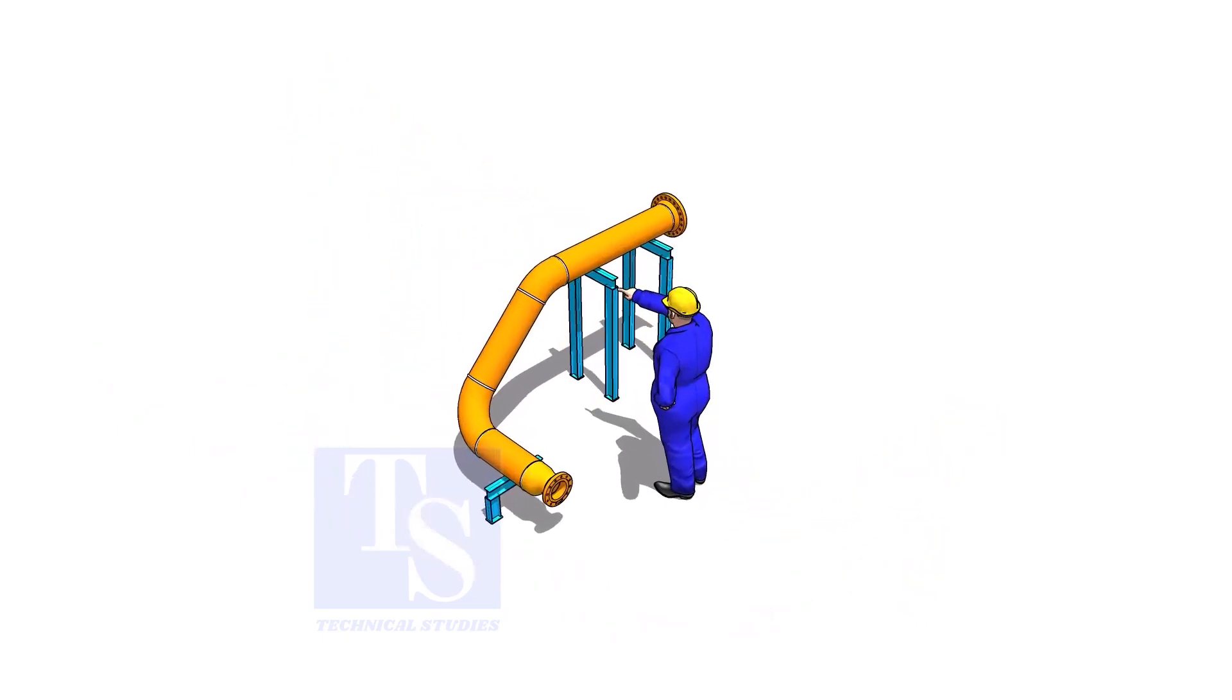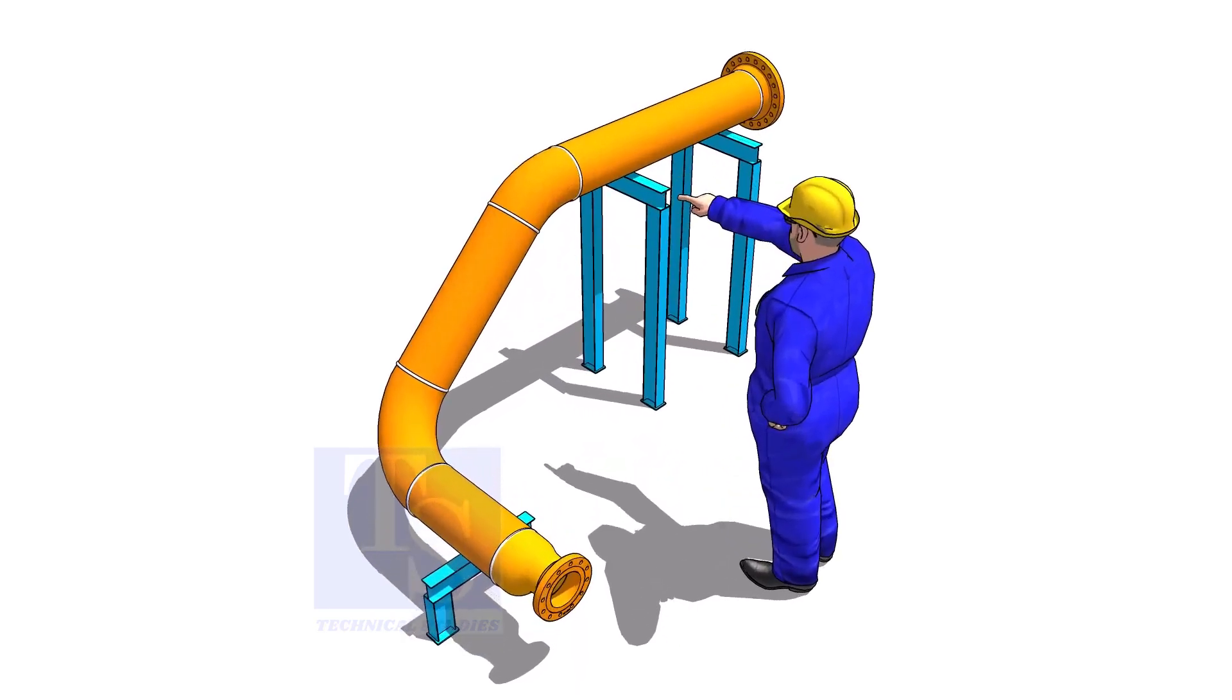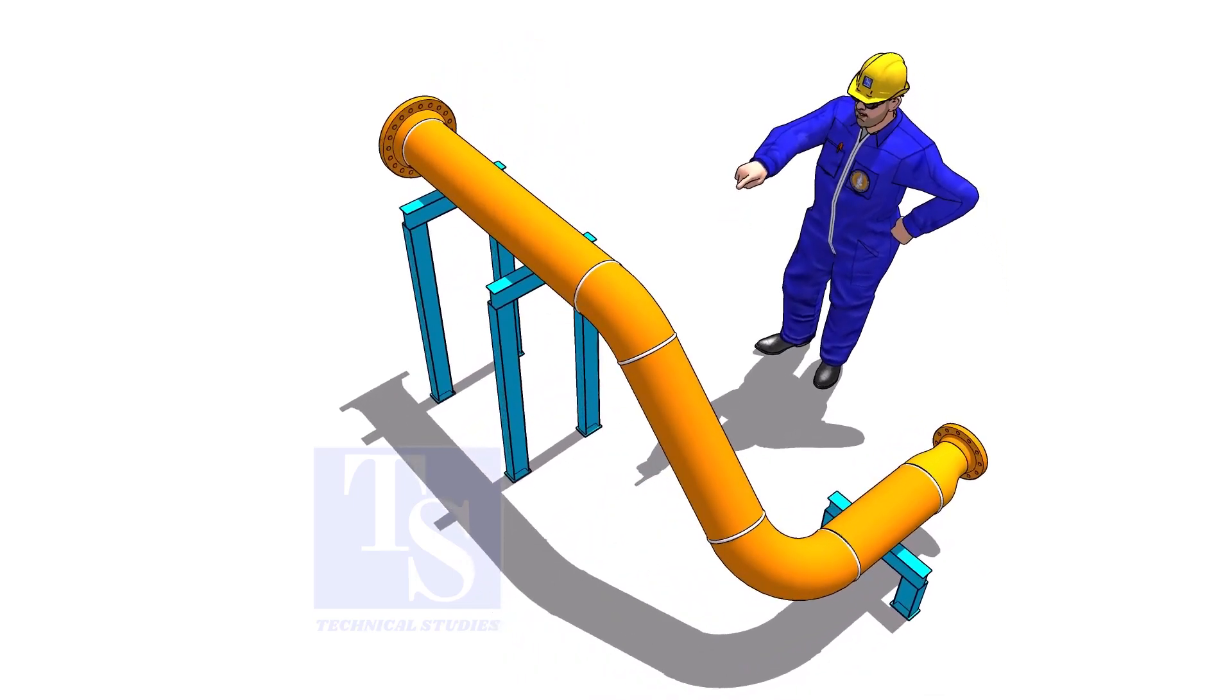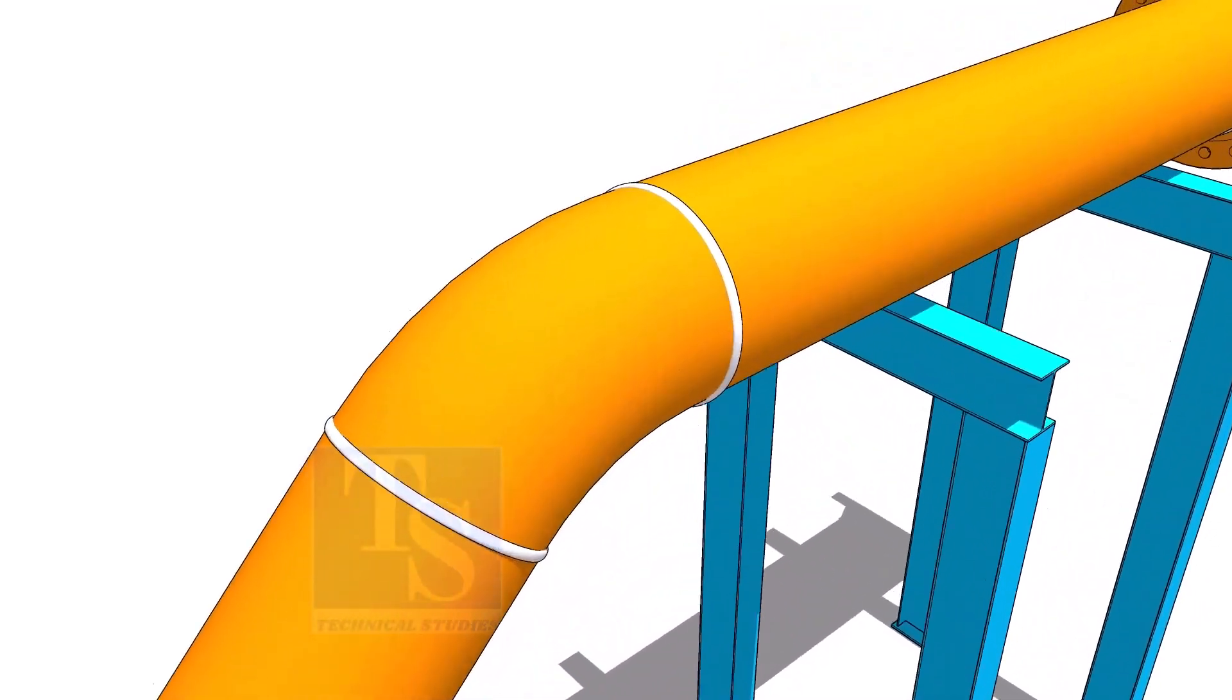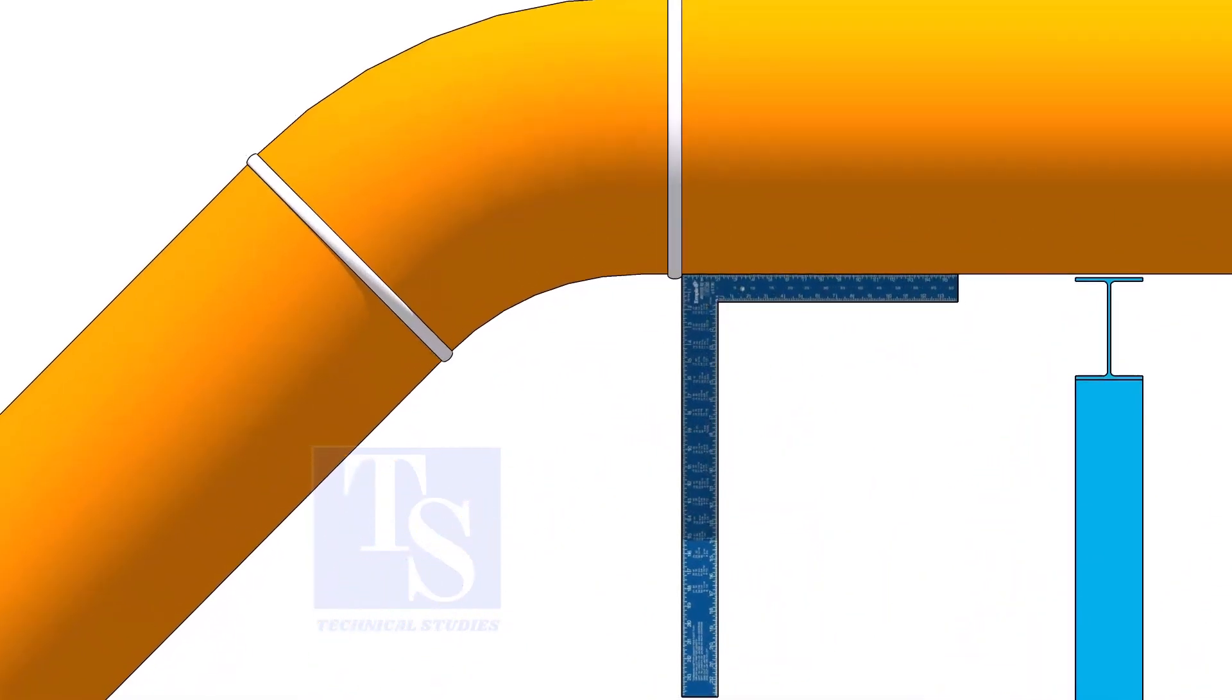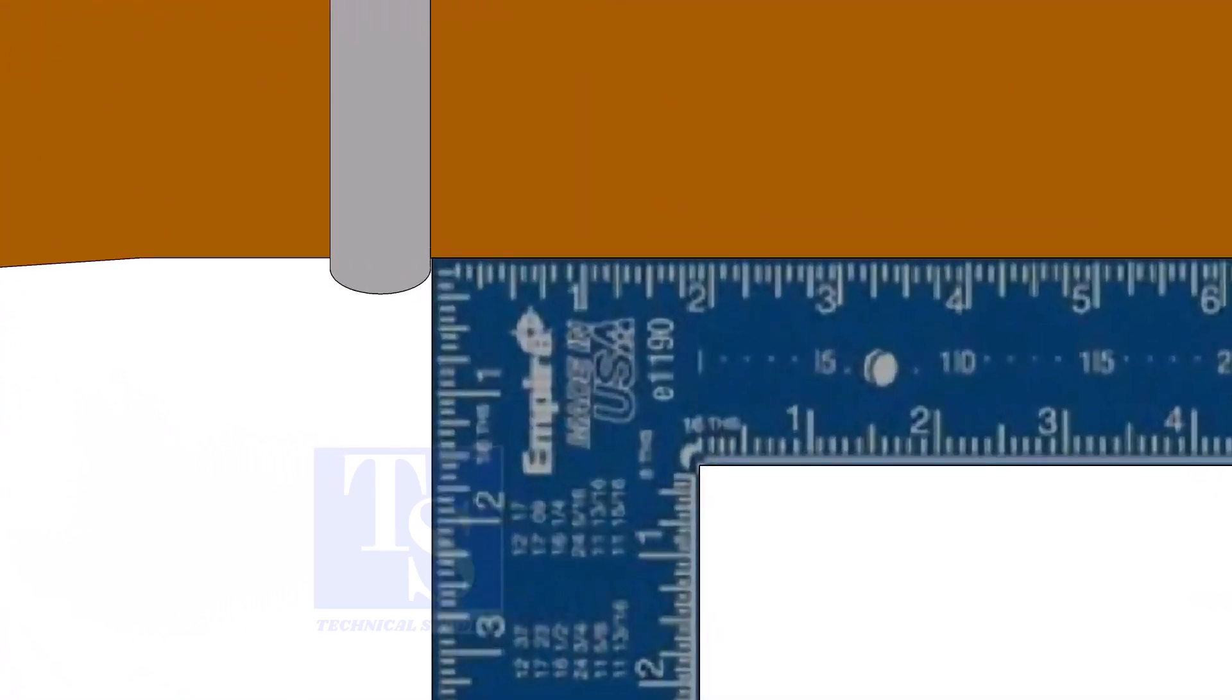Let us check the degree of the smaller elbow first. We need two pieces of large right angles for this job. Hold one right angle on the pipe just outside the weld joint, as shown.